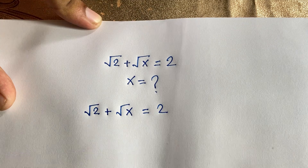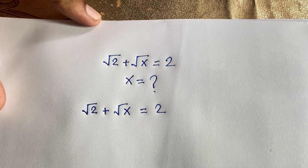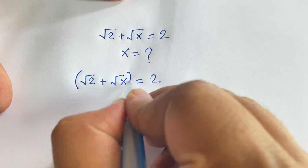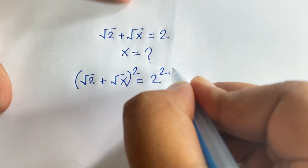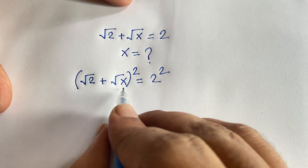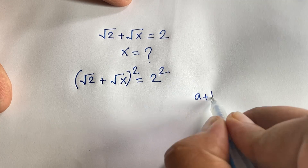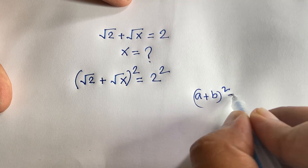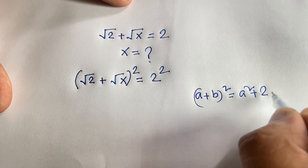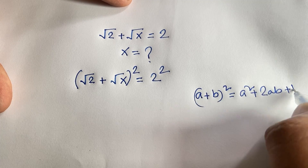At this point I use both sides whole square. If I square both sides, we know the identity: (a + b) whole square is equal to a squared plus 2ab plus b squared.